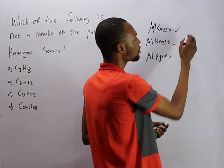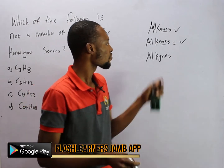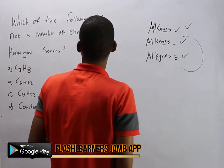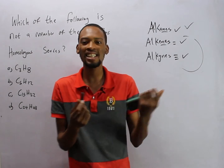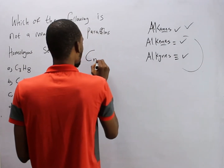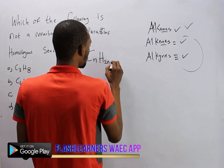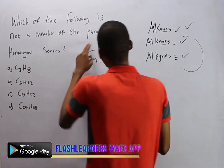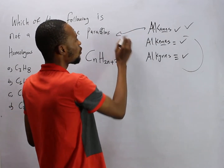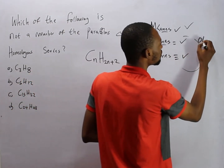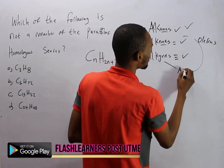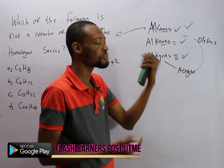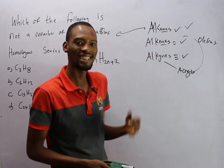Alkenes end with '-ene' and have a double carbon-carbon bond. Alkynes have a triple bond. Alkenes and alkynes are unsaturated, while alkanes are saturated. Alkanes have the general formula CₙH₂ₙ₊₂, while alkenes have CₙH₂ₙ. We are dealing with paraffins because alkanes are called paraffins, while alkenes are called olefins, and alkynes are called acetylenes.